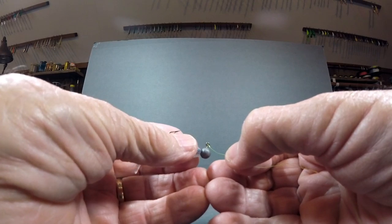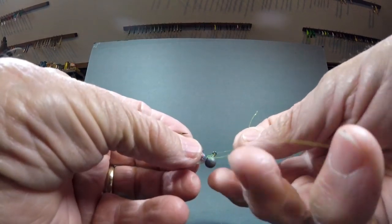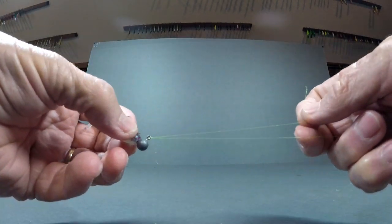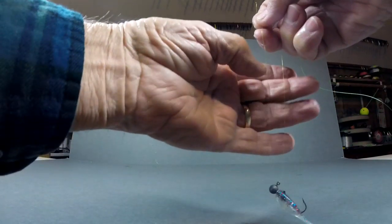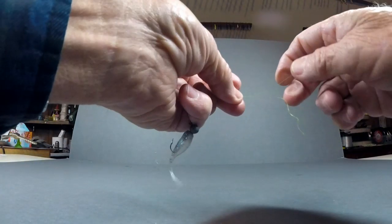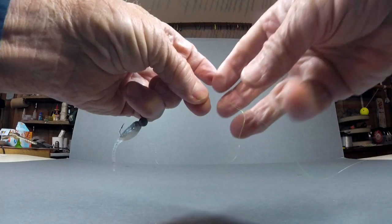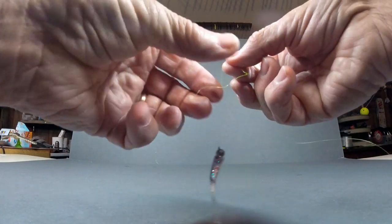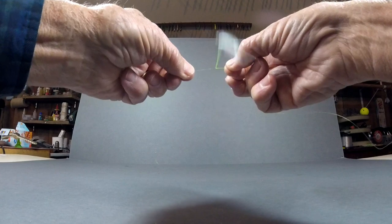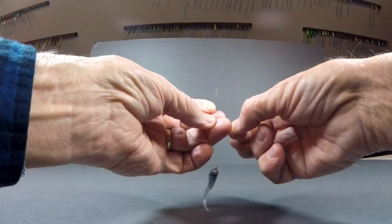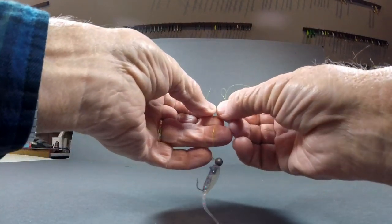Now just watch for a while while I tie a crappie jig and a crankbait on the line using the spinning method. I don't want to bore you with this, but I'm an old school teacher and I know that repetition is the best teacher, and I want to be sure that you understand how to tie this knot.